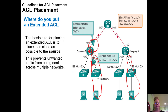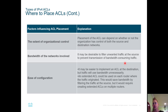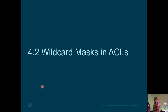Other things to think about when placing access control lists: the extent of organizational control — you may not have control of the source or destination network, which limits where you can place the ACL. Consider bandwidth: if you're filtering based on bandwidth, that could completely change whether you put it on inbound or outbound, closer to source or destination. Also consider ease of configuration — sometimes it's easier to put one ACL on an outbound interface versus putting five ACLs on different inbound interfaces. That does it for covering access control list concepts. Next video, we'll talk about wildcard masks so we can start writing access control lists.